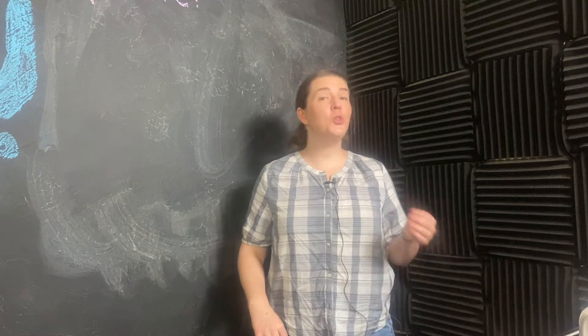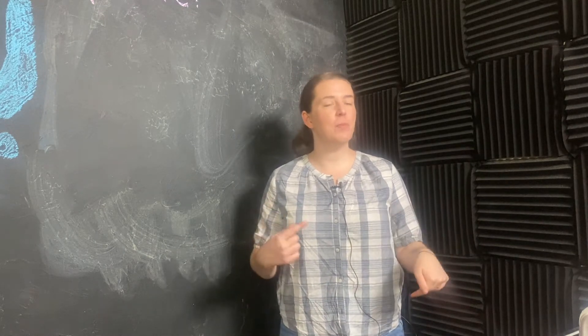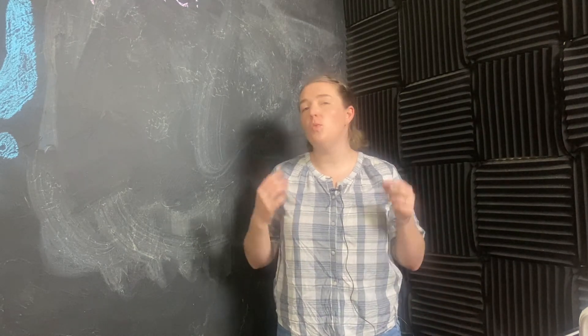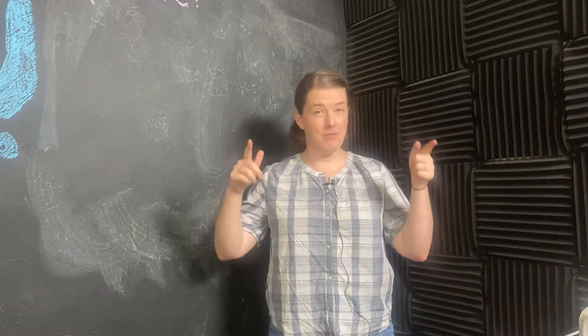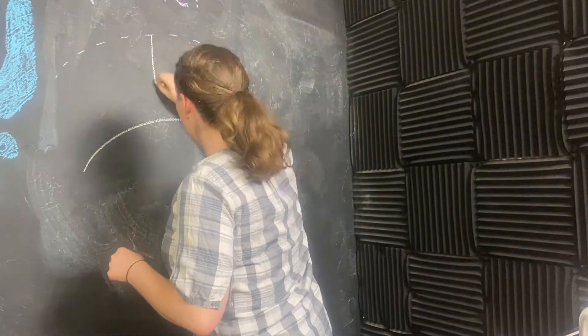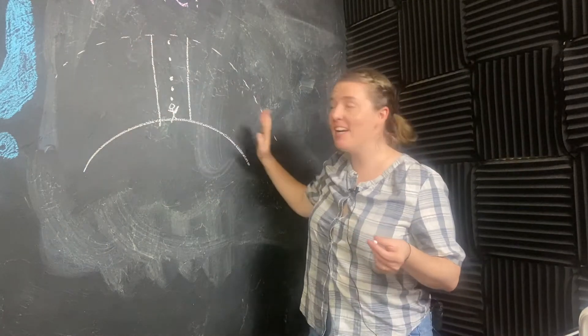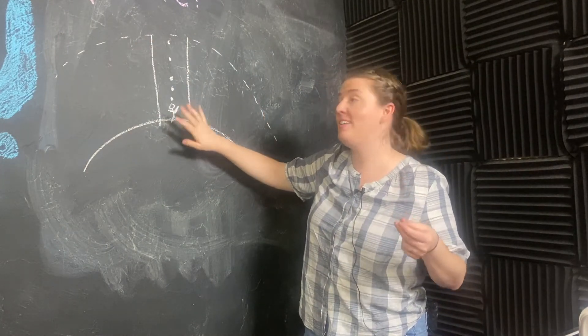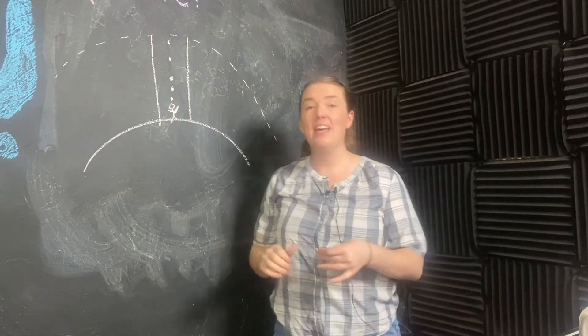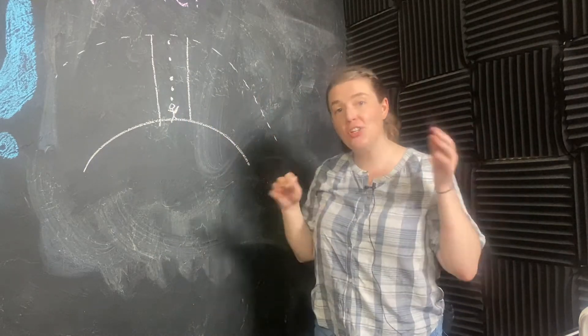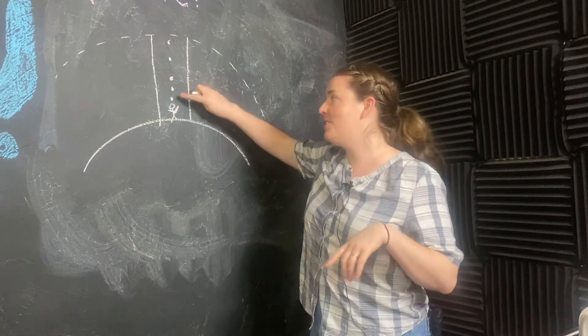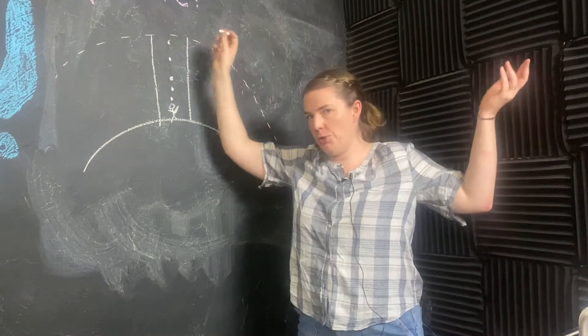I think one of the most intuitive ways to think about atmospheric pressure is to think of it as the weight of the air above you. So if this is the earth, and this is the atmosphere, and this is Timmy, and this is the air above Timmy, then the atmospheric pressure on Timmy right now is five, because I drew five dots.